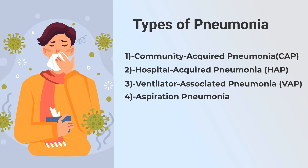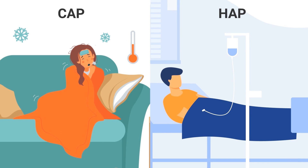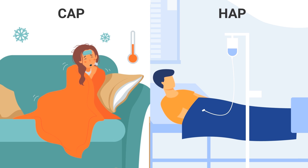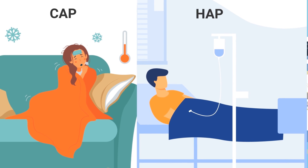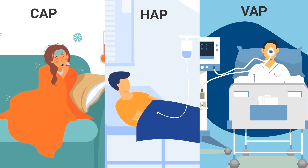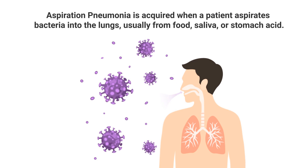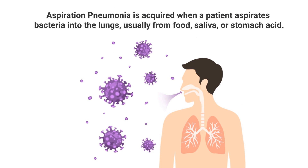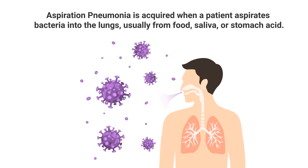Community acquired pneumonia is when a patient gets it outside of the hospital. Hospital acquired pneumonia is when a patient gets it during a hospital stay. Ventilator associated pneumonia is when it's acquired while the patient is on a mechanical ventilator. And lastly, aspiration pneumonia is acquired when a patient aspirates bacteria into the lungs, usually from food, saliva, or stomach acid.